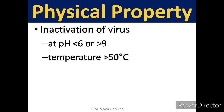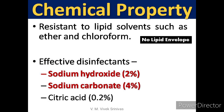Physical property: This virus is sensitive at pH less than 6 or pH more than 9, and also at temperatures more than 50 degrees Celsius. Chemical property: As the virus does not possess a lipid envelope, it is resistant to lipid solvents such as ether and chloroform. Chemical disinfectants like 2% sodium hydroxide, 4% sodium carbonate, and 0.2% citric acid are effective against this virus.